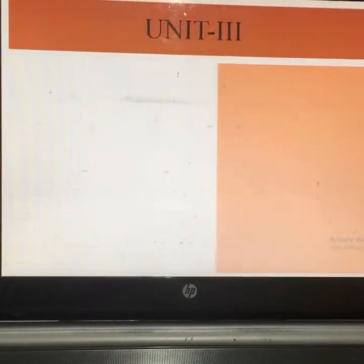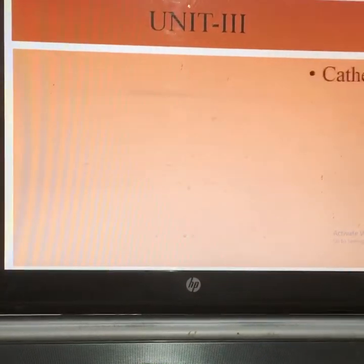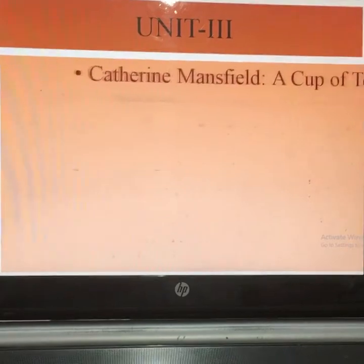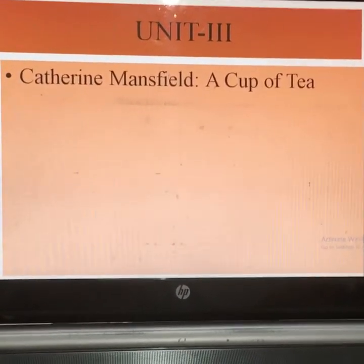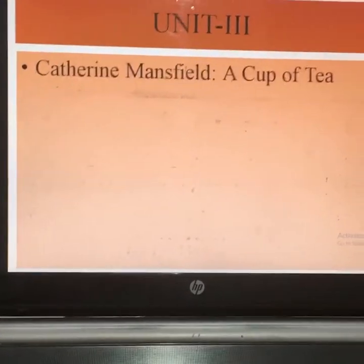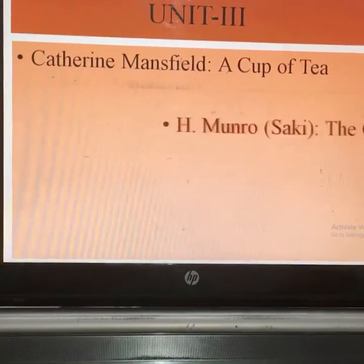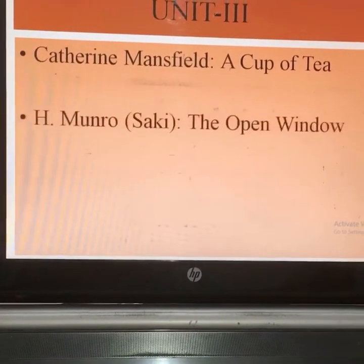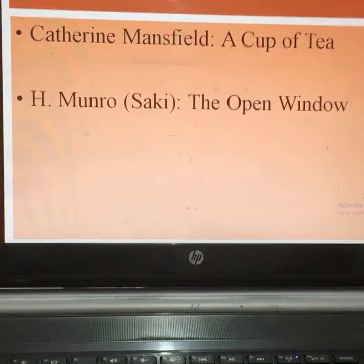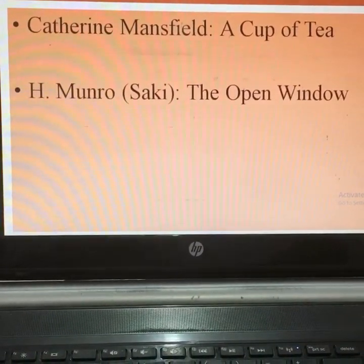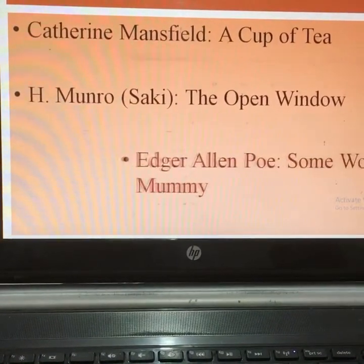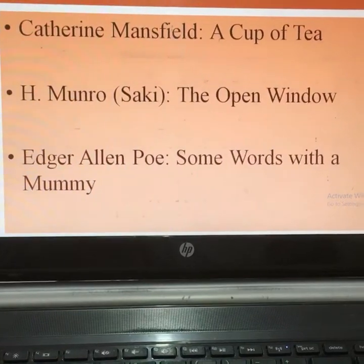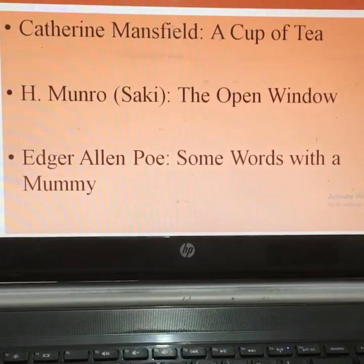Now Unit Third contains different short stories. The first one is written by Katherine Mansfield; the title is 'A Cup of Tea.' The second writer is H. Munro, whose pen name is Saki; the title of the story is 'Open Window.' The third writer is Edgar Allan Poe; his story 'Some Words with the Mummy' is included in this unit.